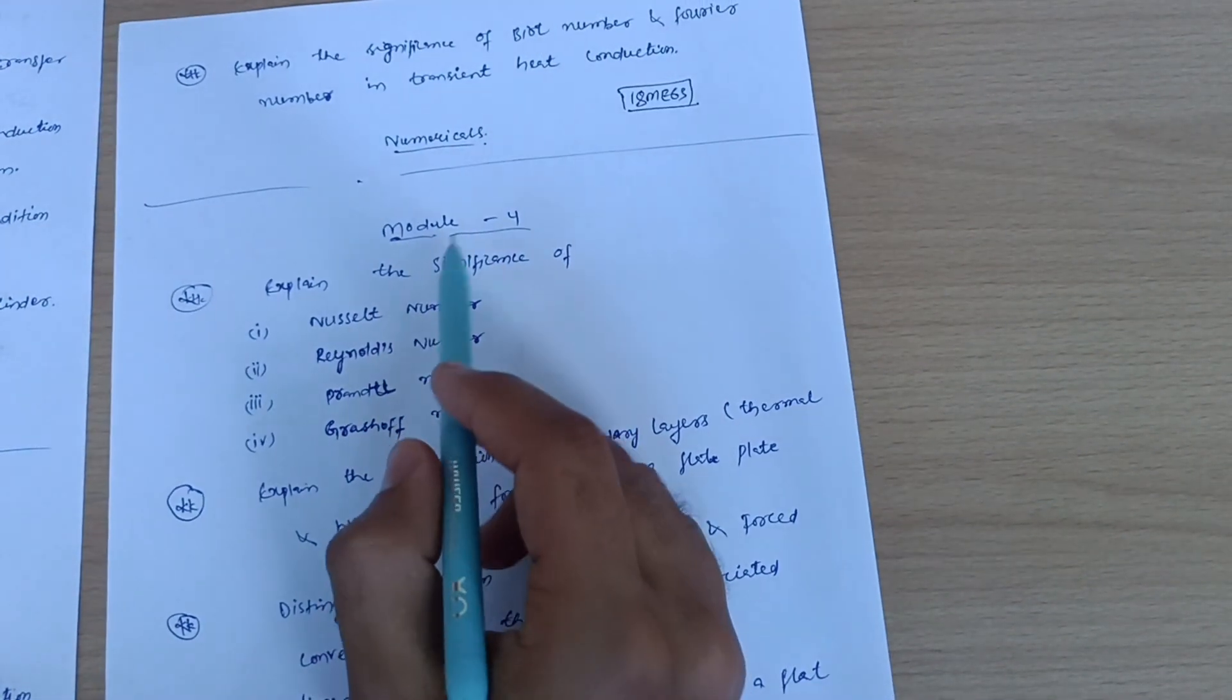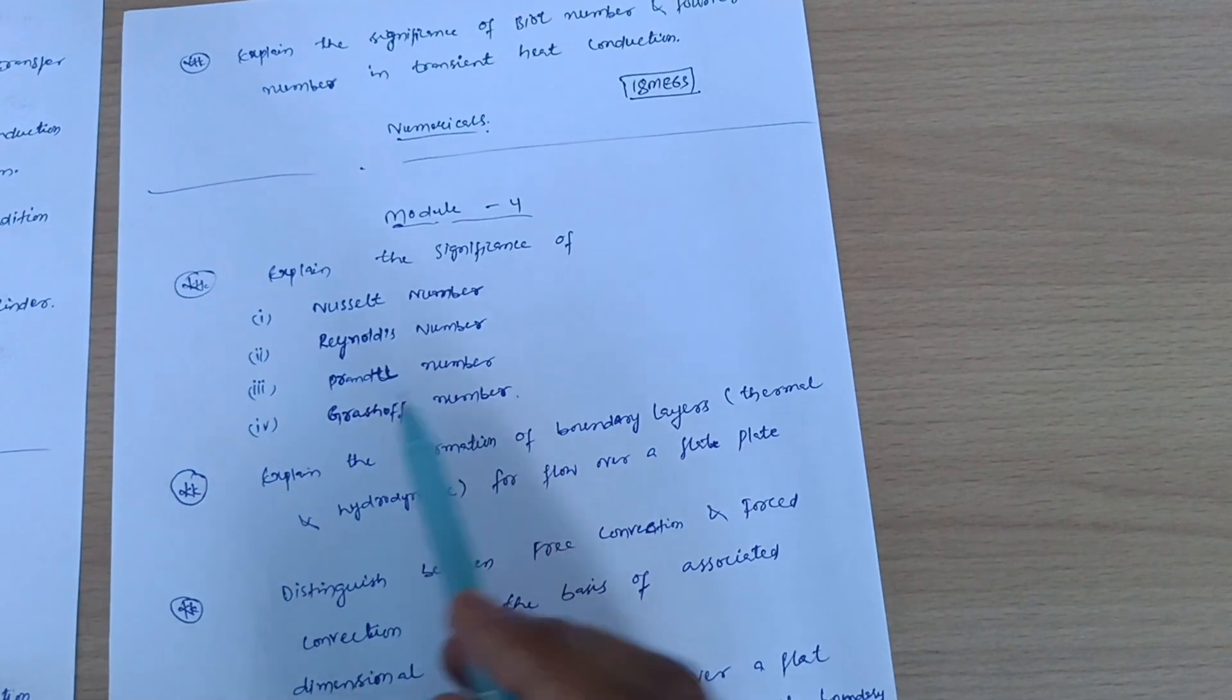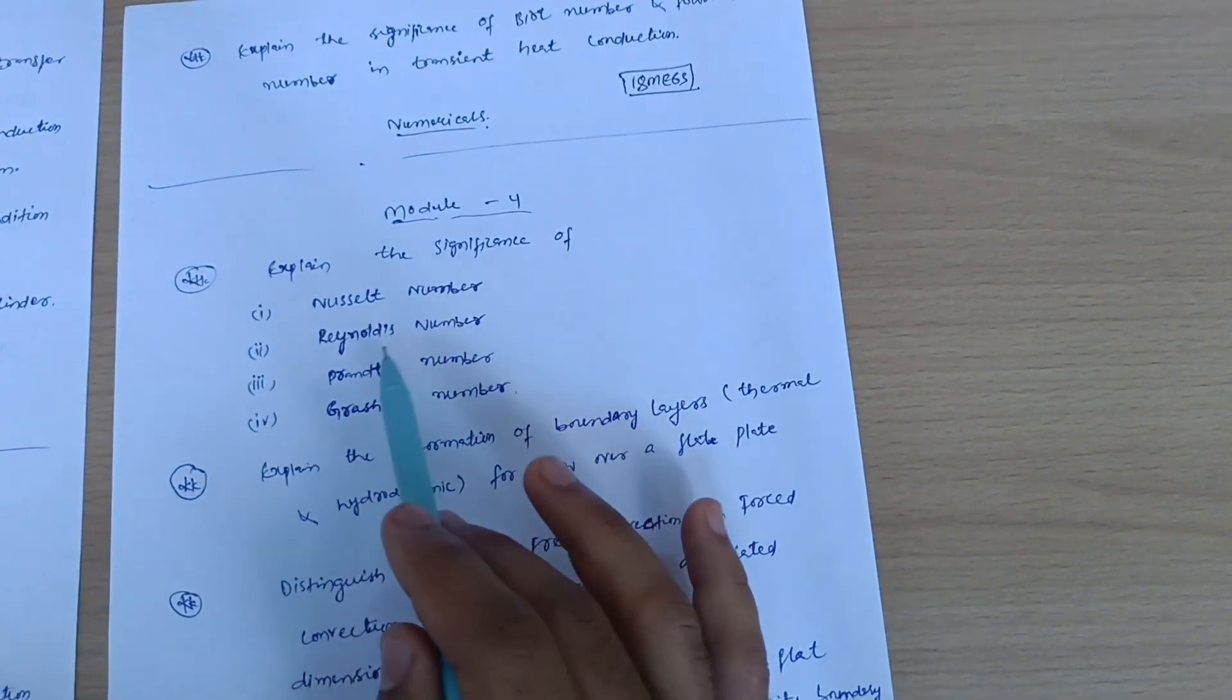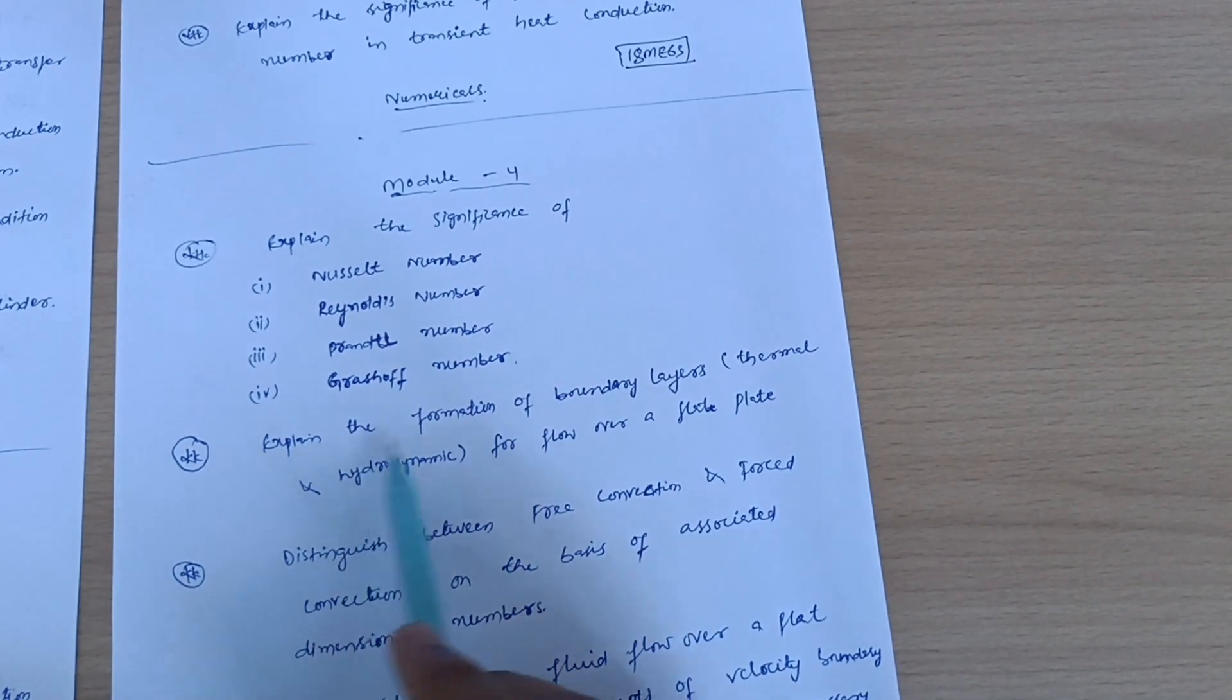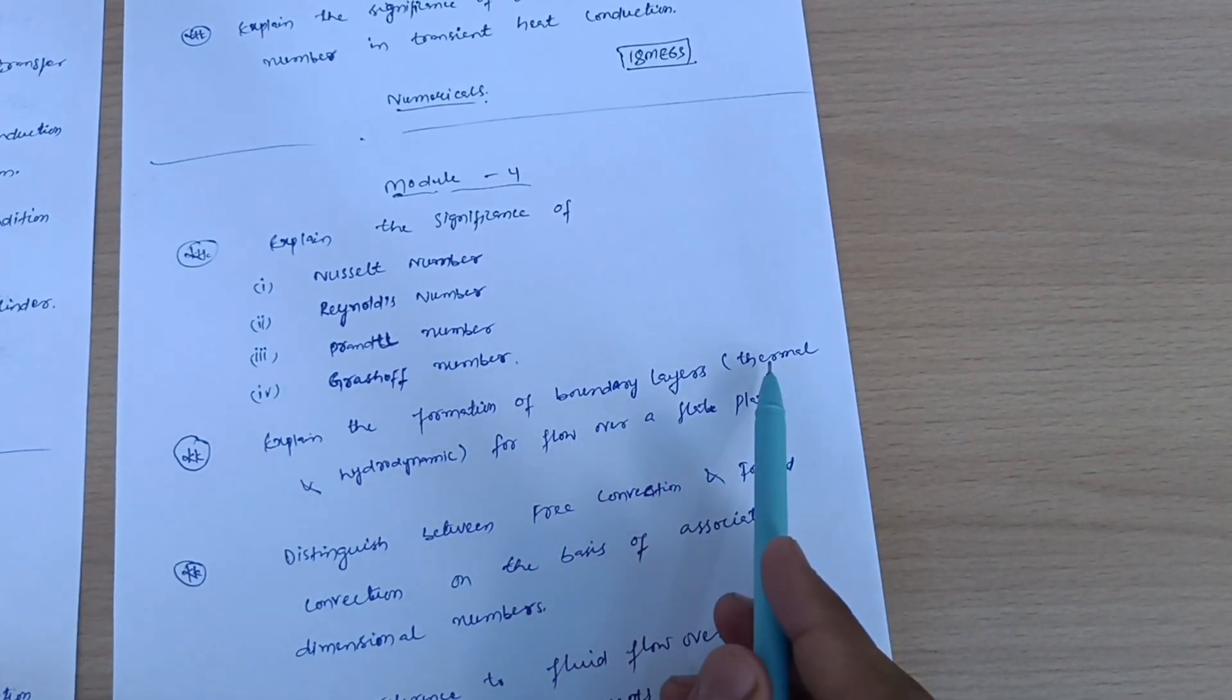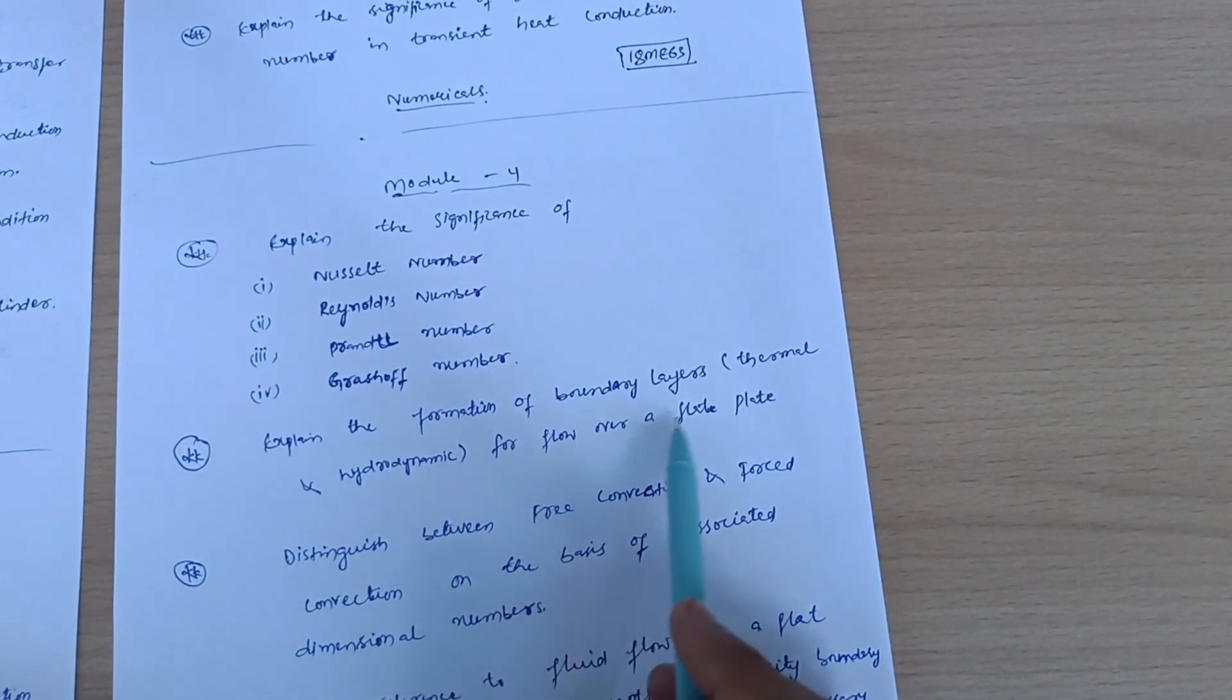Next is Module 4. Explain the significance of Nusselt number, Reynolds number, Prandtl number, and Grashoff number. Explain the formation of boundary layers - thermal and hydrodynamic - for flow over a flat plate.